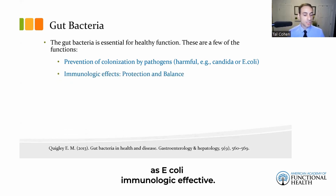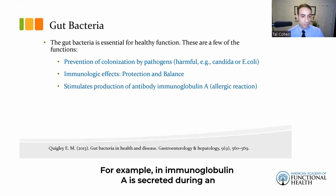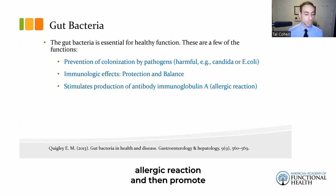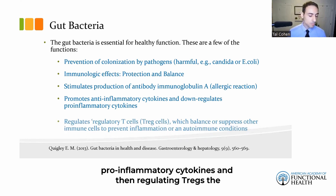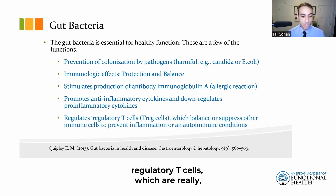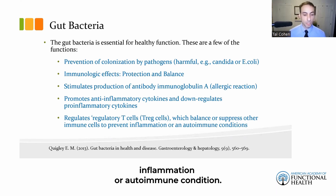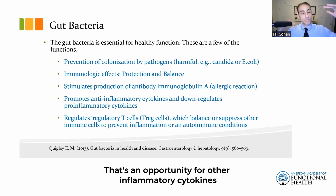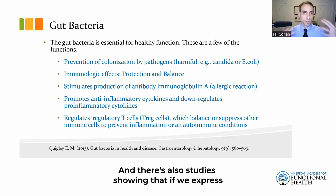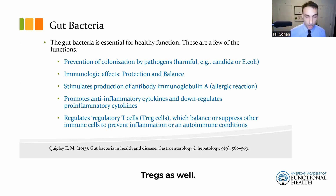Gut bacteria have an immunologic effect — they protect and balance our immune system, stimulate production of antibodies. For example, immunoglobulin A is secreted during allergic reactions. They promote anti-inflammatory cytokines, downregulate pro-inflammatory cytokines, and regulate T-regs (regulatory T cells), which are really important in immune balance because they suppress other immune cells and prevent inflammation or autoimmune conditions. Lower T-regs create an opportunity for inflammatory cytokines to increase, and expressing more inflammatory cytokines will in turn reduce T-regs — with the immune system, it's all about balance.